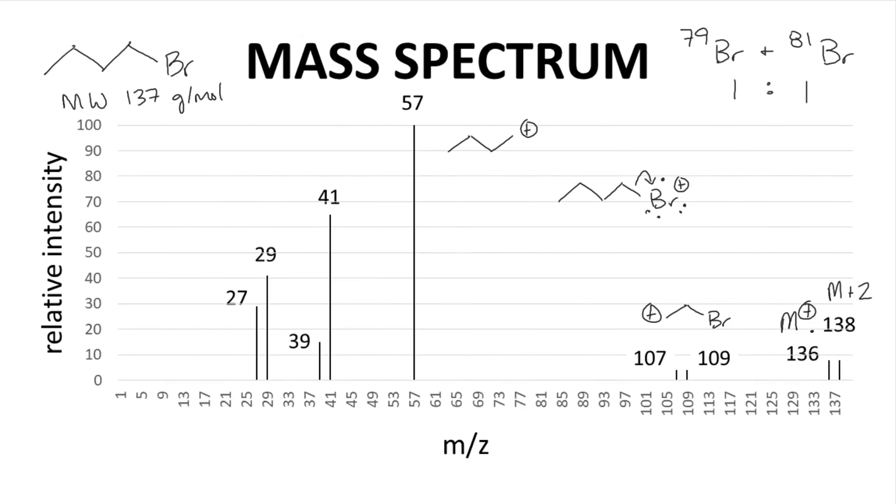Chlorine has two abundant isotopes, chlorine-35 and chlorine-37, but their ratio is about 3 to 1.